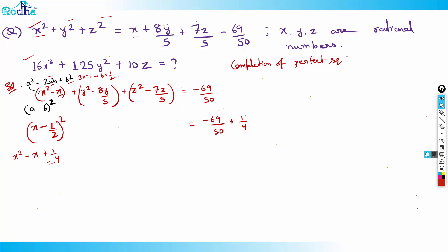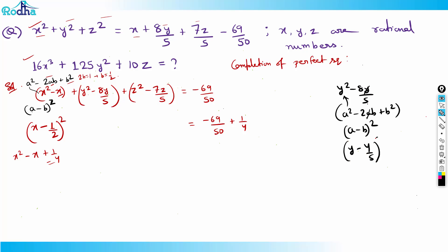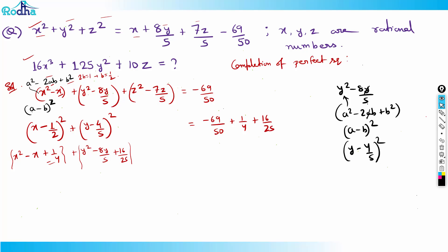For the y² − 8y/5 term, same approach: a = y, and 2ab = 8y/5, so 2b = 8/5, meaning b = 4/5. So I write (y − 4/5)². Expanding gives y² − 8y/5 + 16/25. Since I've added 16/25 on the left, I also add 16/25 to the right side.